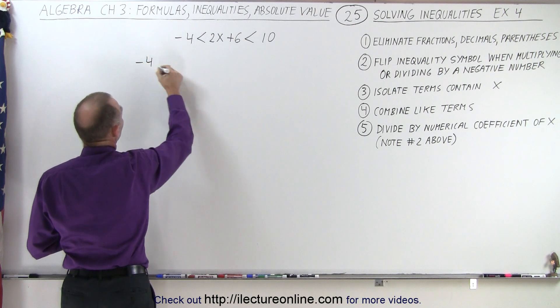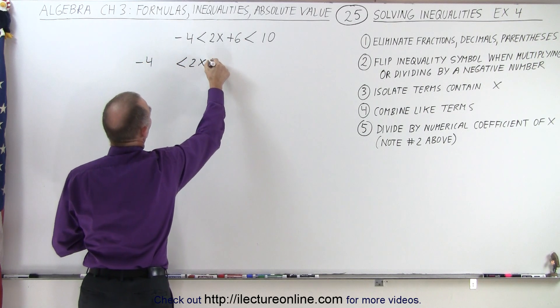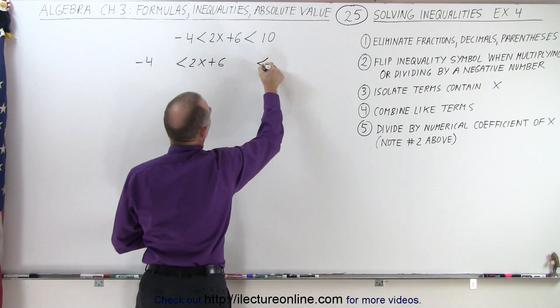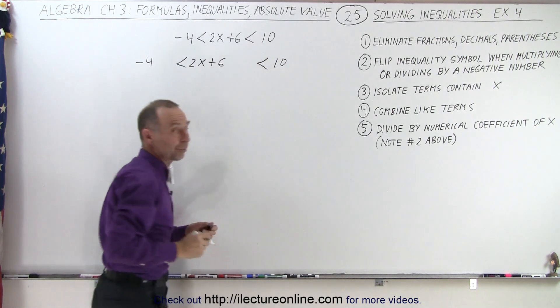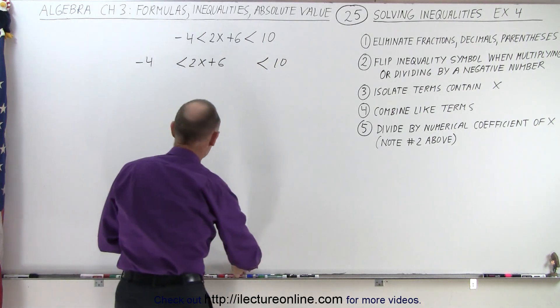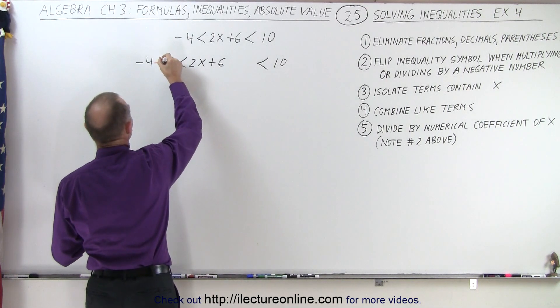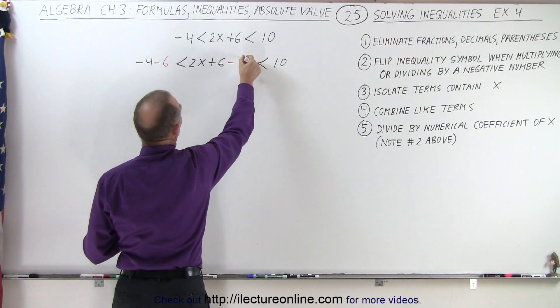Negative 4, 2x plus 6, 10. Notice I've left some space because what I'm going to do now is I'm going to subtract negative 6 from here, from here, and from there.